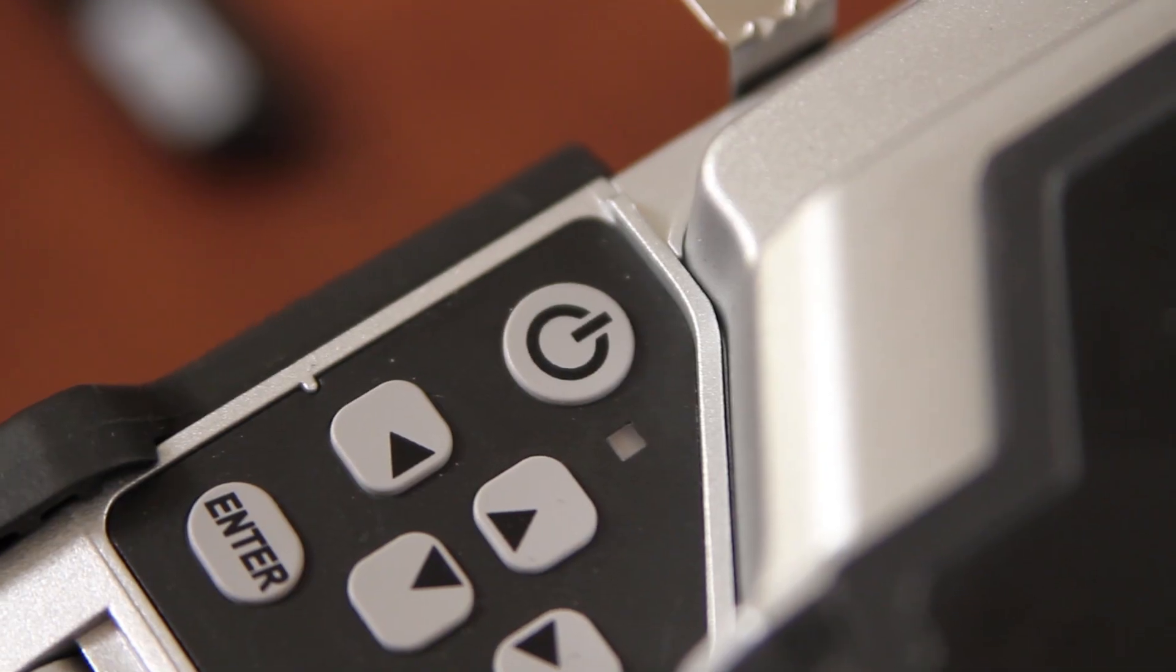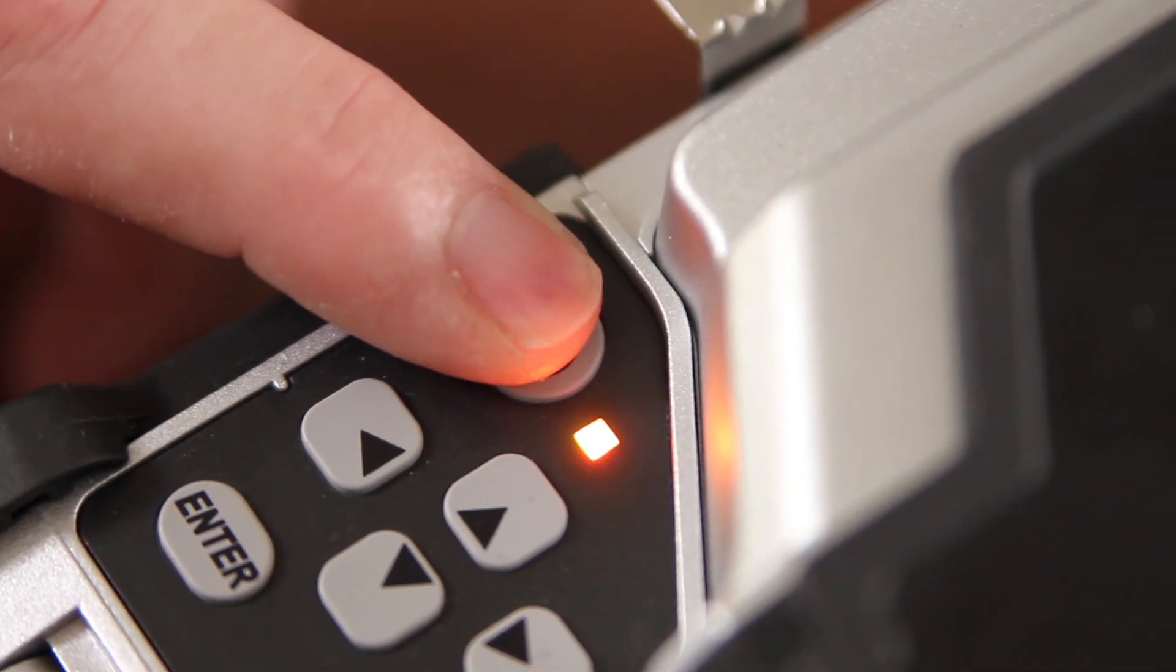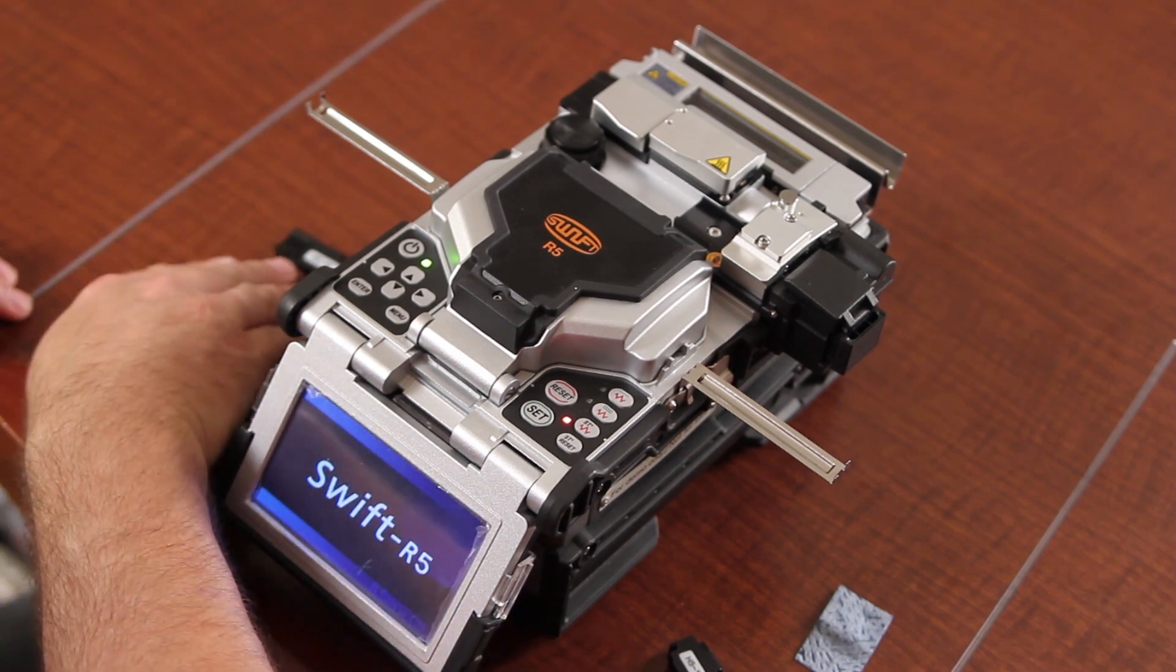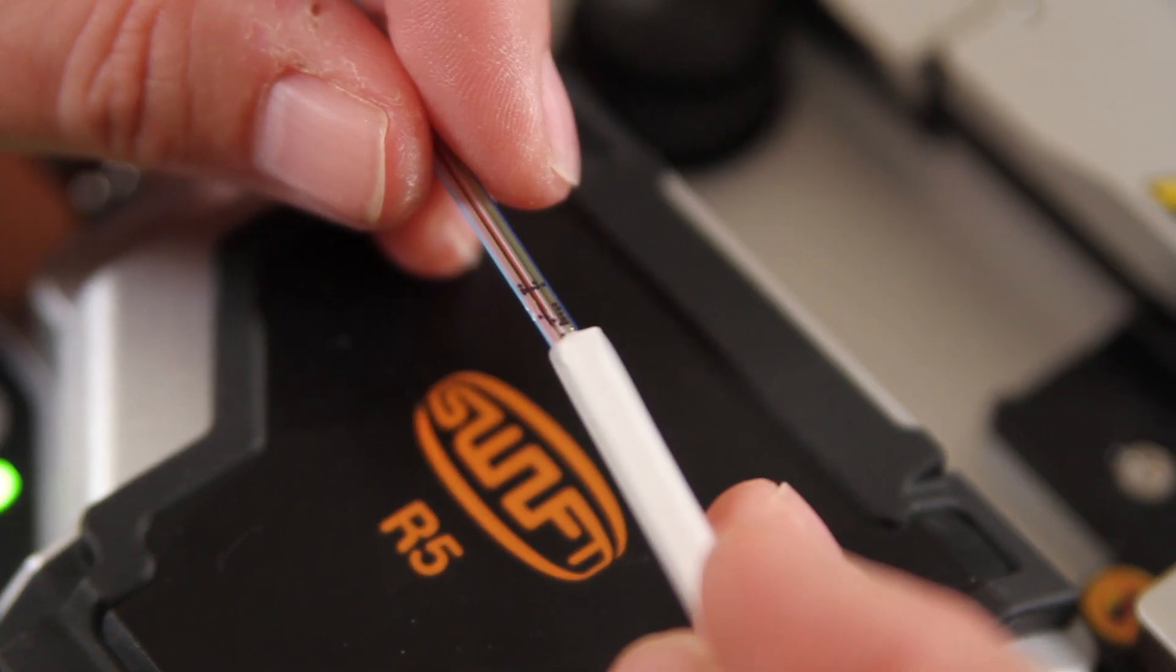First, turn your machine on. Next, install your shrink tube.